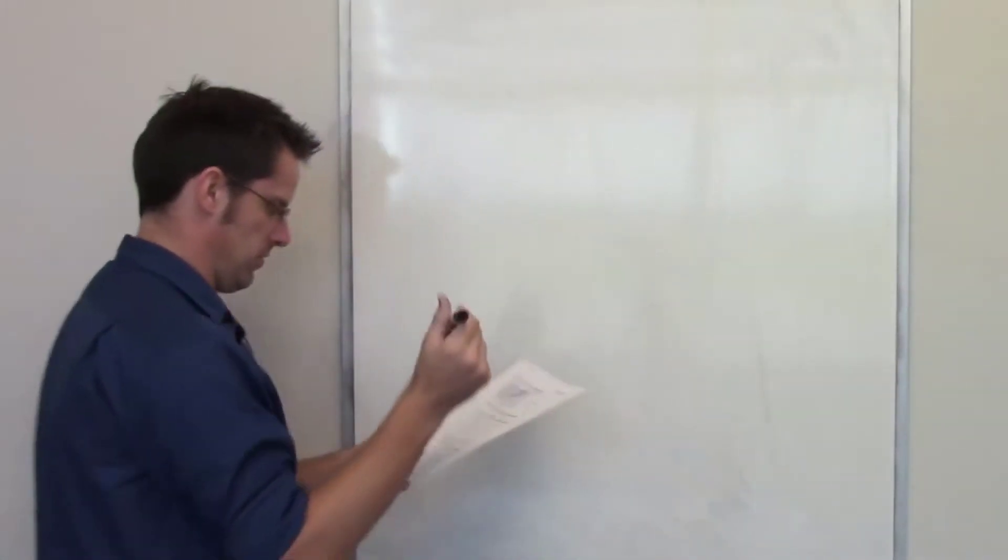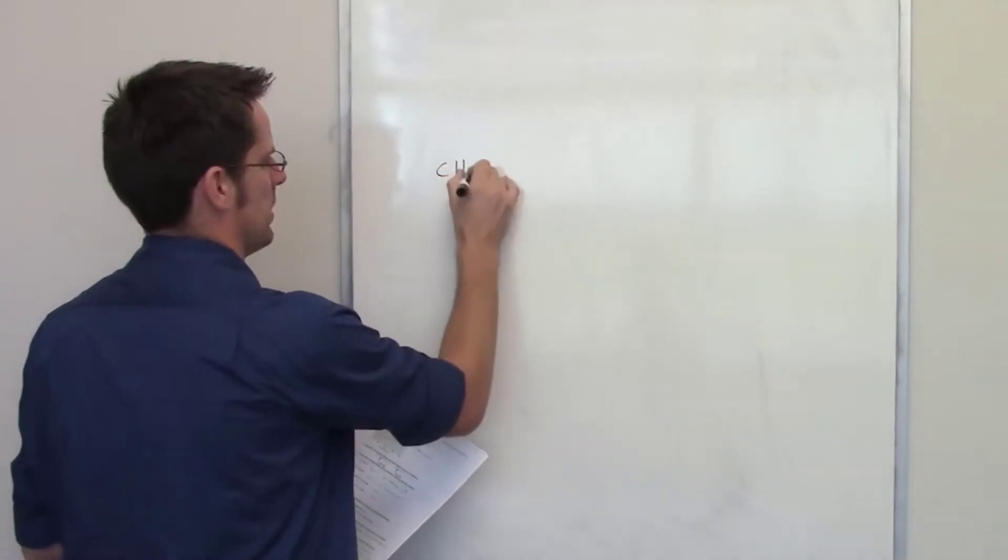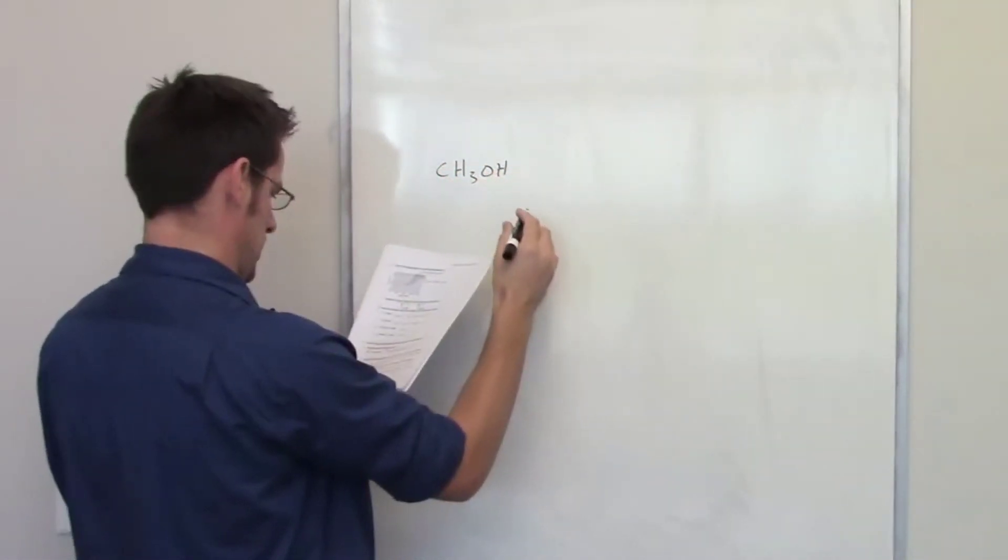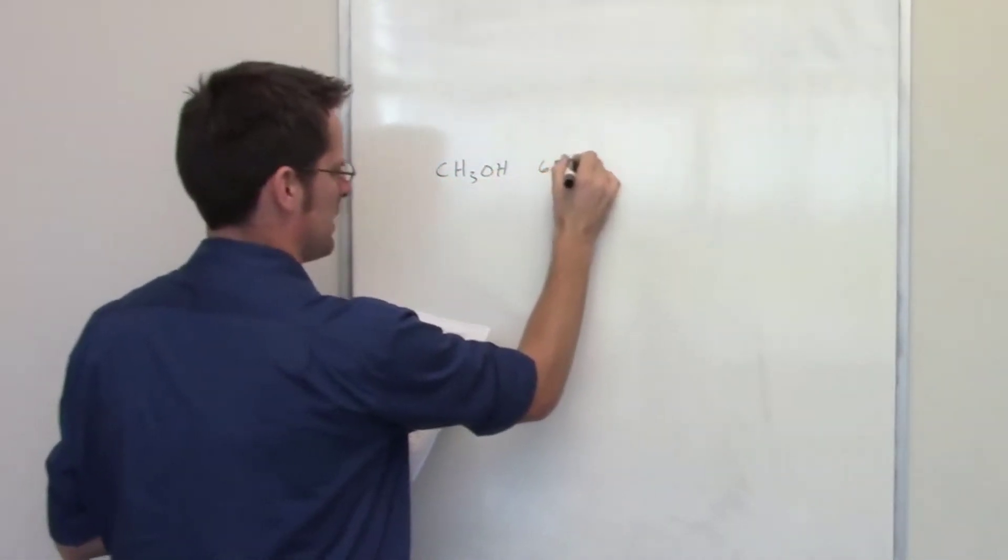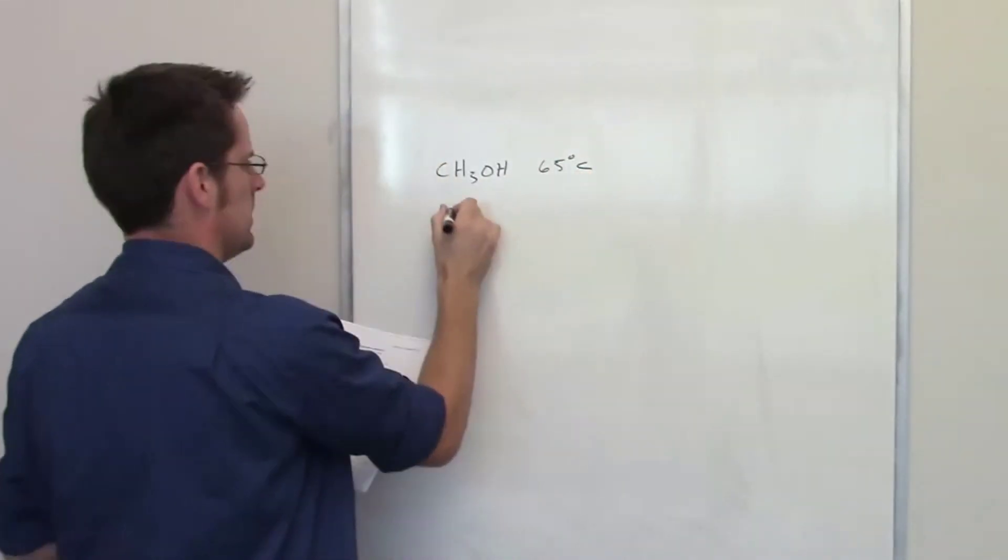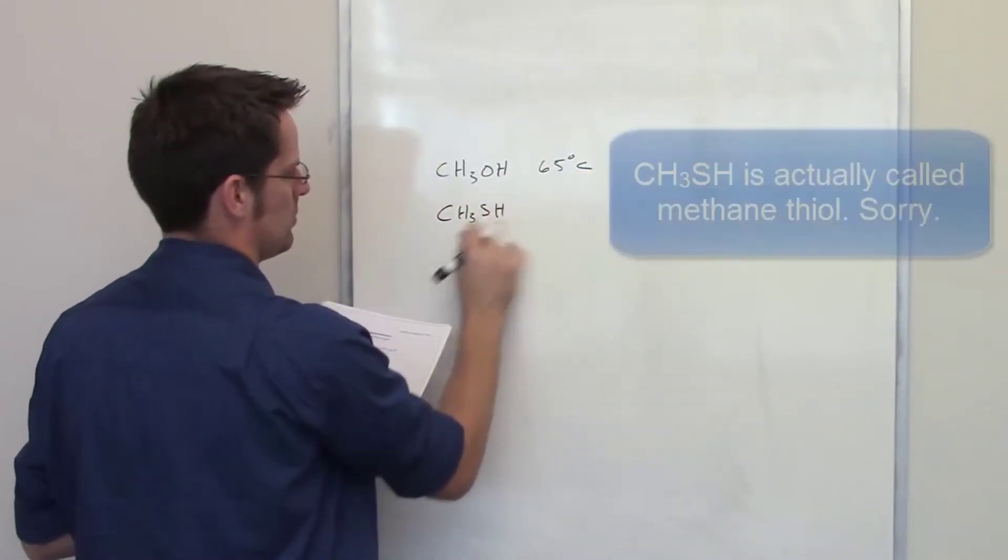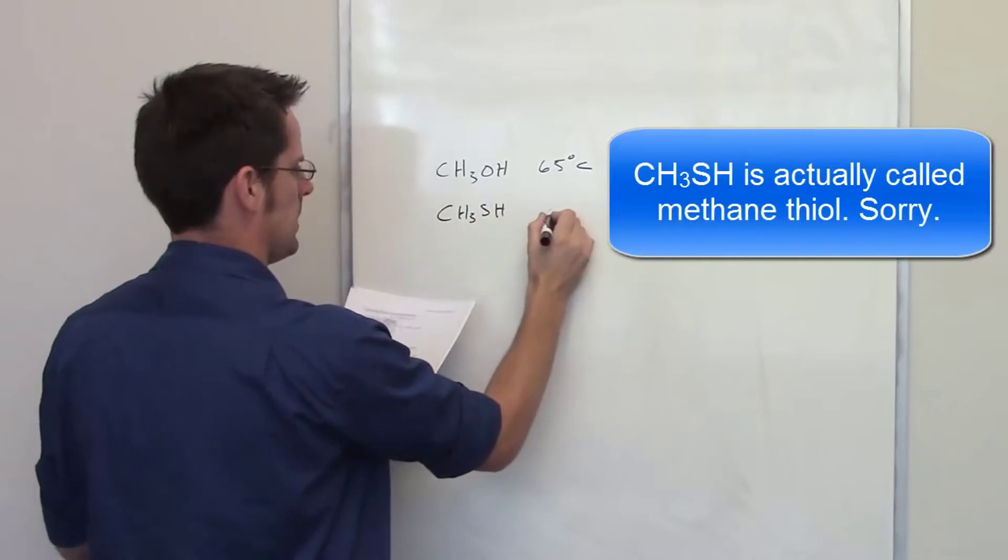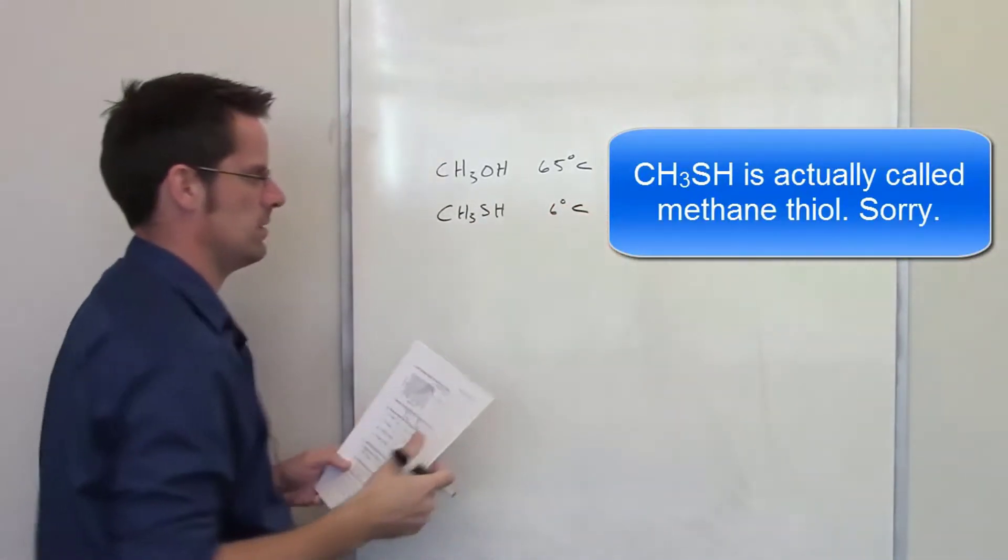Here we're asked to explain the following observation: methanol, whose formula is CH₃OH, has a boiling point of 65 degrees Celsius, while methyl sulfide, whose formula is CH₃SH, has a boiling point of 6 degrees Celsius.